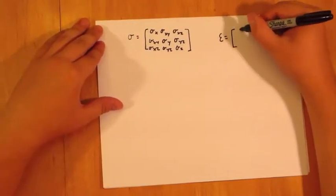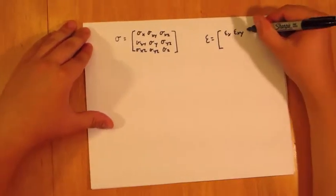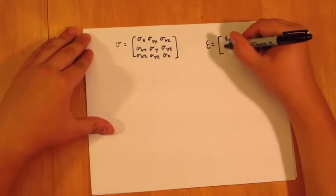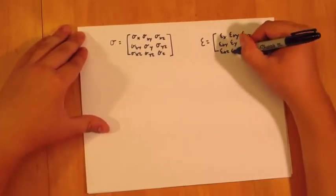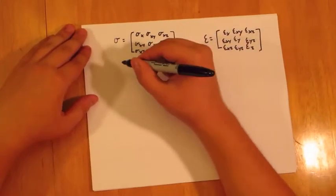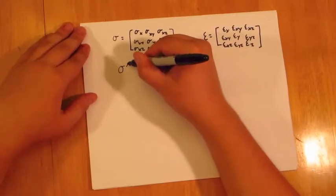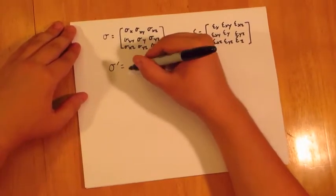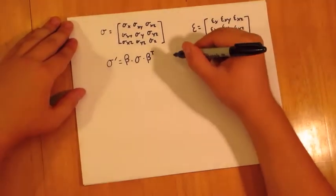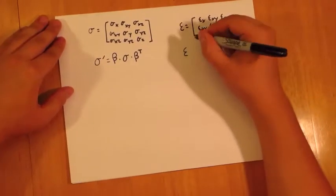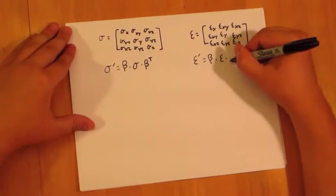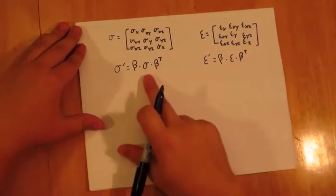When we're talking about strain, we have our strain matrix, which has epsilon_x, epsilon_xy, epsilon_y, and so on. As discussed, when we're looking at a 3D stress transformation, the new stress equals beta times the original stress matrix times beta transpose. It's the exact same for strain — the new strain equals beta times the old strain matrix times beta transpose.